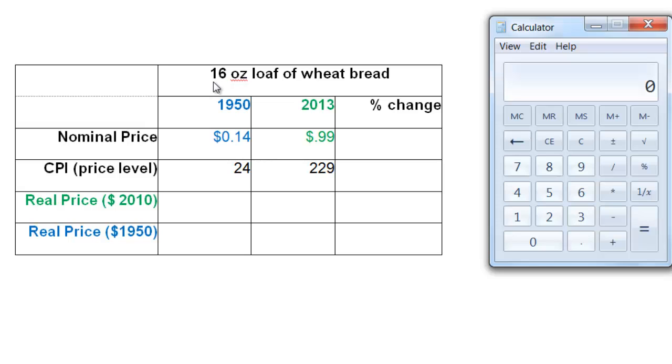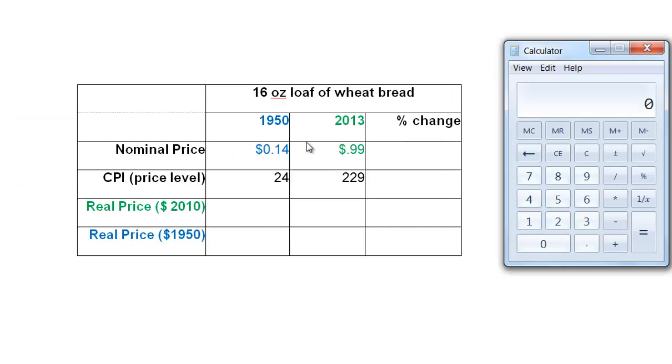This time I've got a 16-ounce loaf of bread, and I've got a 1950 price of $0.14 and a 2013 price of $0.99. This is where the old-timer says, oh my goodness, the price of bread has gone up about six times. And the first thing we'll do is calculate the percent change for the nominal price. We need to fill in every blank space in the table.